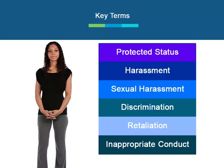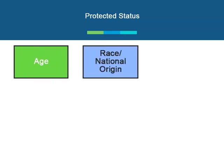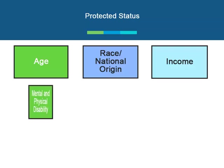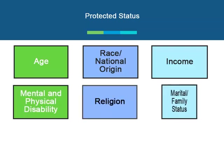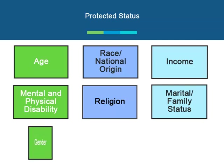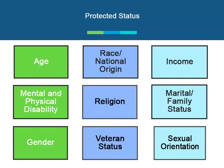City employees and volunteers are expected to support efforts to maintain a professional workplace. To help you better understand your responsibilities, we'll review some key terms. Protected statuses include age, race and national origin, source of income, mental and physical disabilities, religion, marital family status, gender, veteran status, sexual orientation and gender identity, and any other protected status under the law.